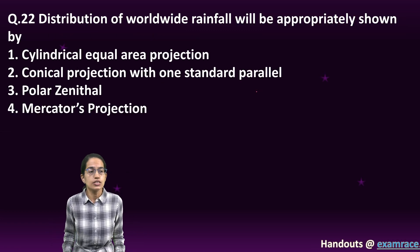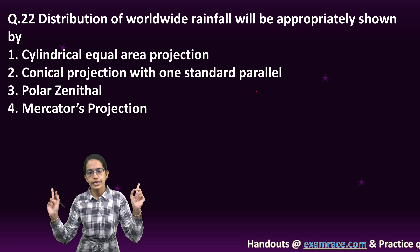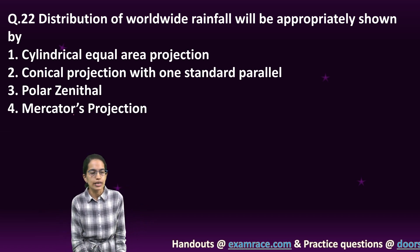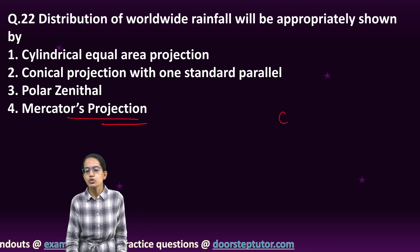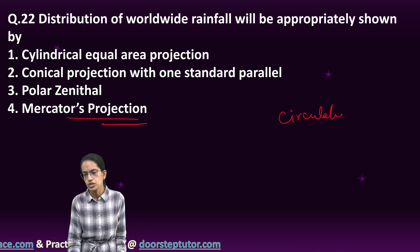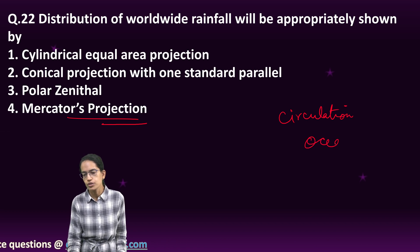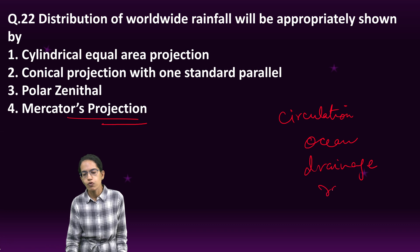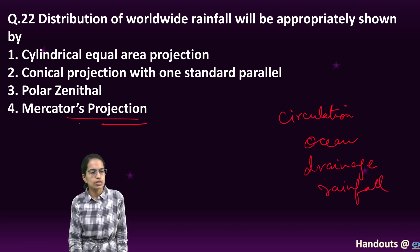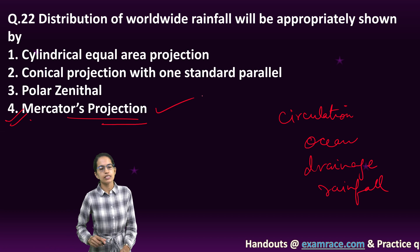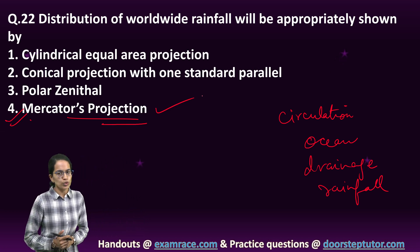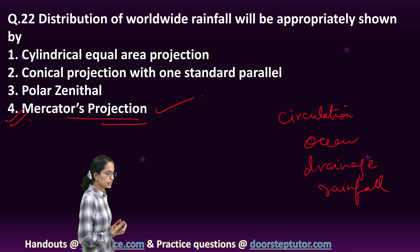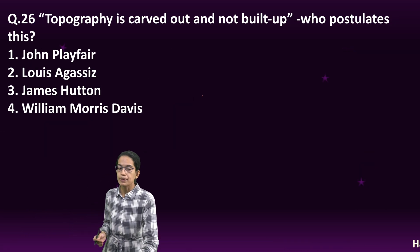The next question: the distribution of worldwide rainfall is shown through Mercator projection. Mercator projection is the most widely used projection to show any kind of circulation, ocean parameters, drainage parameters, and rainfall. So Mercator is the right projection. This was a question from Cartography. Questions from Cartography are usually applicative and important.